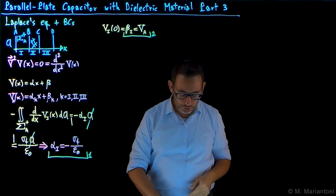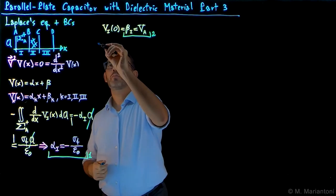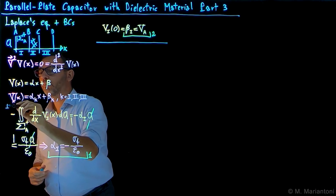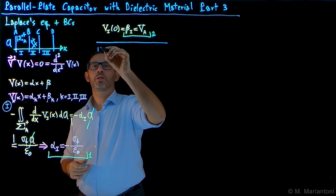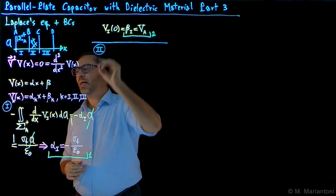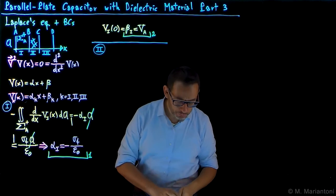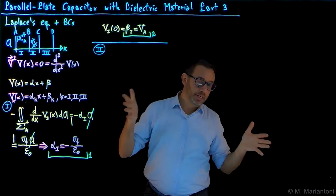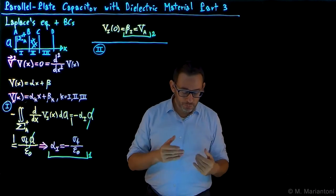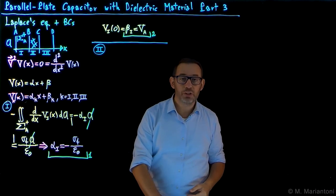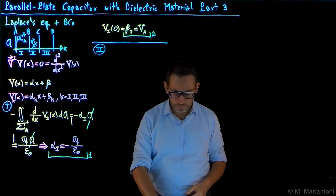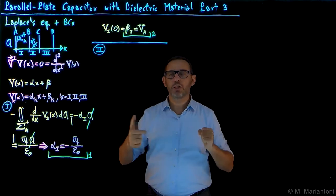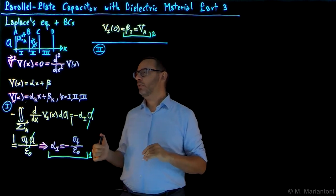Now we found two of the six parameters. Now the most interesting part: how do we find the parameters for region two, namely α₂ and β₂? A few videos ago, we introduced boundary conditions for the potential with multiple dielectric materials. We know that the so-called Neumann condition — which I didn't call it as such before, but it is called the Neumann condition — involves the derivative of the potential.